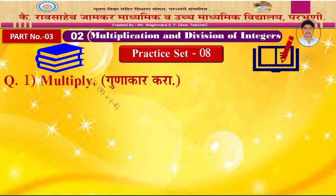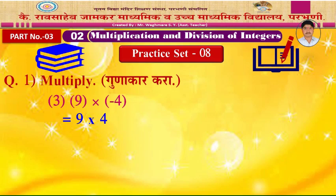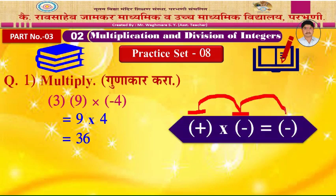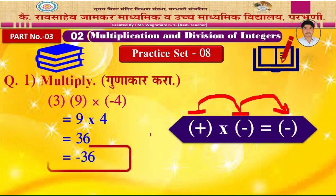Example 3: 9 into minus 4. You may multiply without thinking about the sign — 9 into 4 is 36. Remember the rule: the first is a positive number and the second is a negative number. When one is positive and one is negative, the product is also negative. So write the sign in the answer: negative 36.